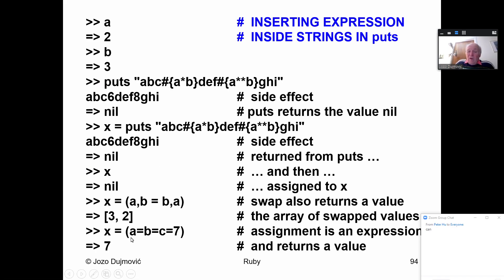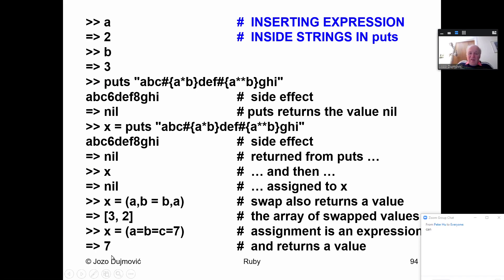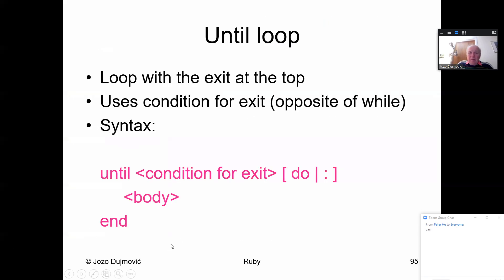Also, if you have multiple assignments like A=B=C=7, this returns a value. Same as in Scheme or C++, this returns a value. When you say X equals this, you get 7 as the result in interactive mode.